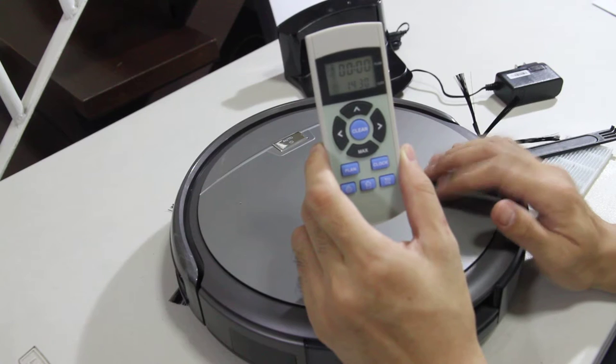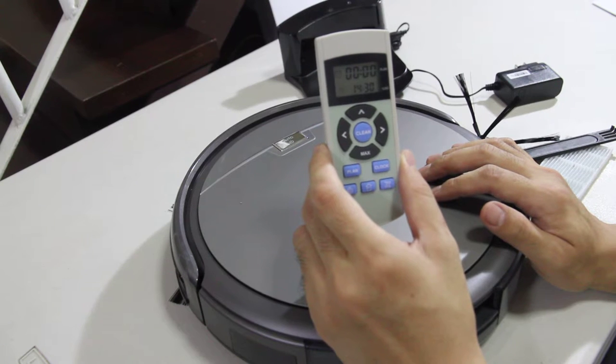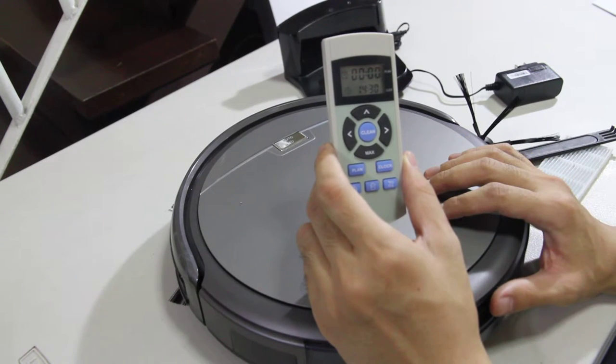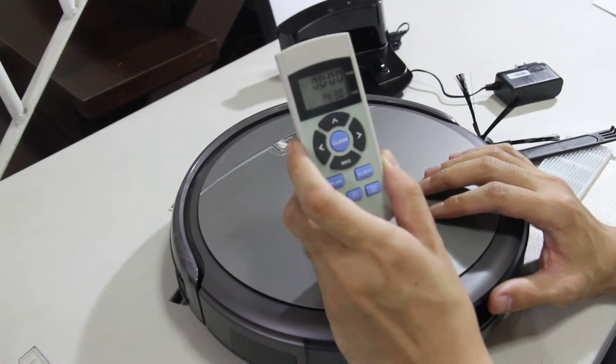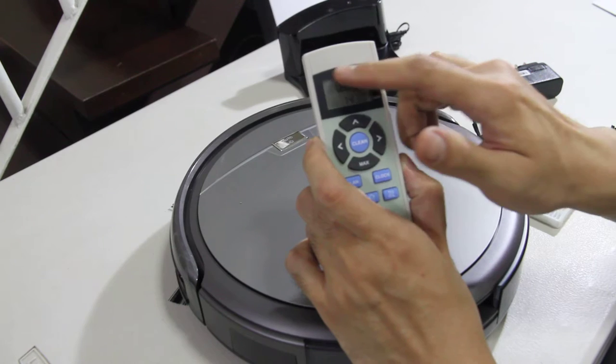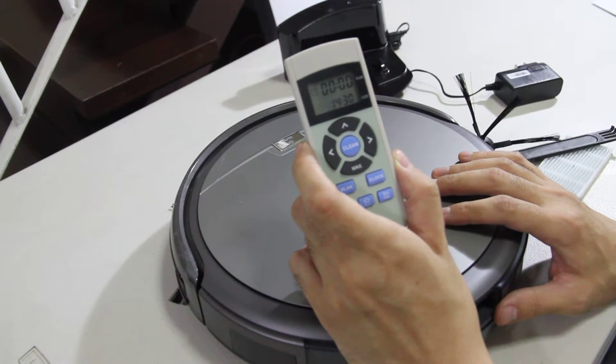then every day this robot will wake up and clean your room, clean your whole ground floor every day at 6 o'clock. So if you want to change the schedule, you can use this to change the schedule, but you can only schedule it for one time every day.